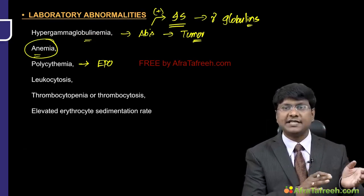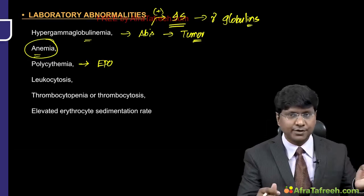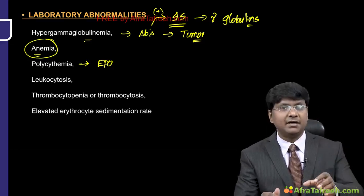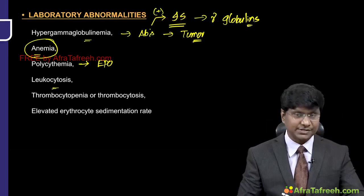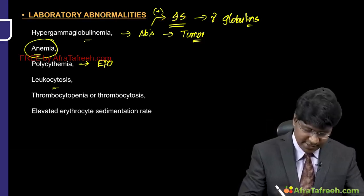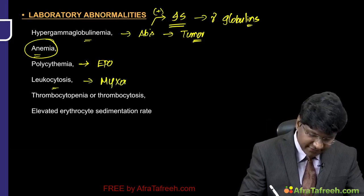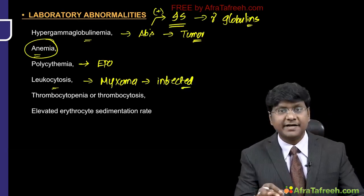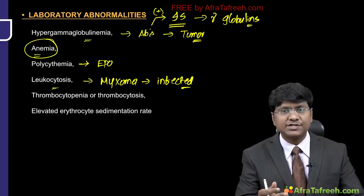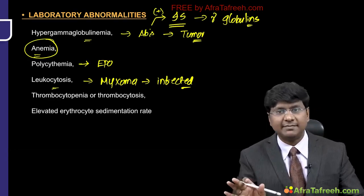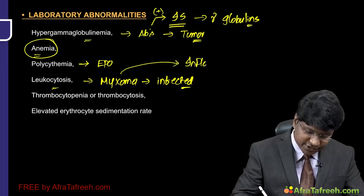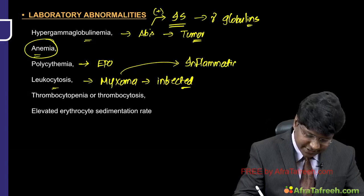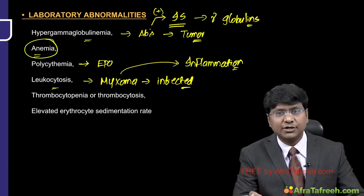Leukocytosis can occur because these myxomas can get infected, leading to immune activation and increased white blood cells. These myxomas also induce inflammation of surrounding structures, further causing leukocytosis.